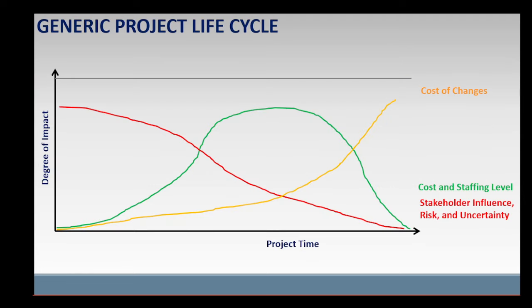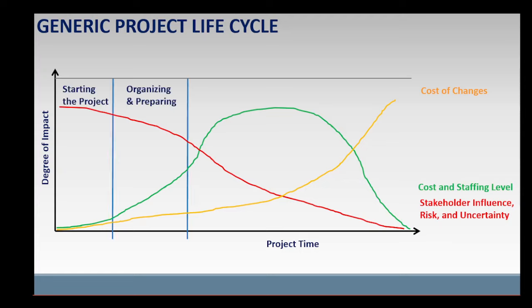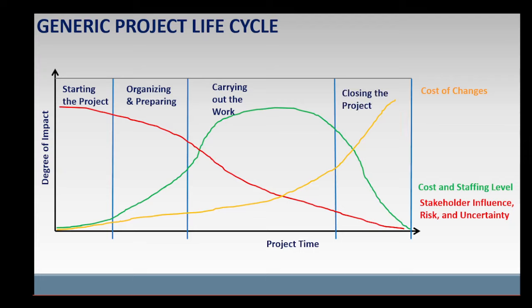Any project life cycle can be mapped to the generic project life cycle, which is divided into four phases: starting the project, organizing and preparing, carrying out the work, and closing the project. A successful project life cycle ends with the creation of a unique deliverable, such as a new product.